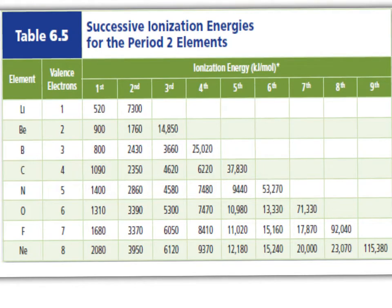When you look here, lithium has one valence electron, and the energy to remove the first electron from lithium is 520 kilojoules per mole. That takes off the only valence electron. But if you try to take the next electron off, suddenly you need 7,300 kilojoules per mole.